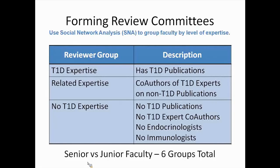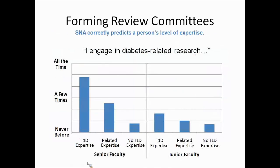The problem was who's going to review these? Normally a review group consists of the type 1 diabetes experts, who are used to seeing proposals written by experts, not by people outside of their field. We wanted to figure out how to fairly review these very novel ideas. So we used social networks to form six different groups: type 1 diabetes experts, a related expertise group of co-authors of those experts who haven't themselves written about type 1 diabetes, and people with no type 1 diabetes expertise — who have never written about it, never worked with anyone who has, and are not endocrinologists or immunologists.